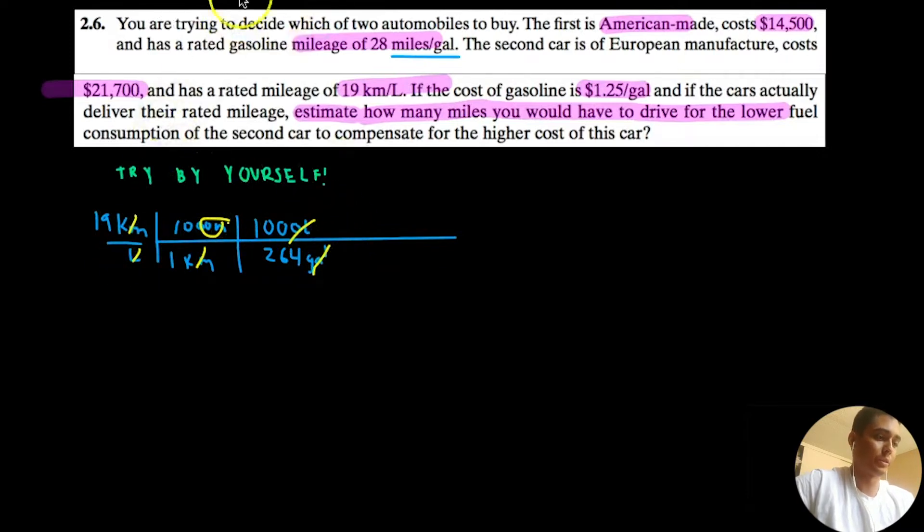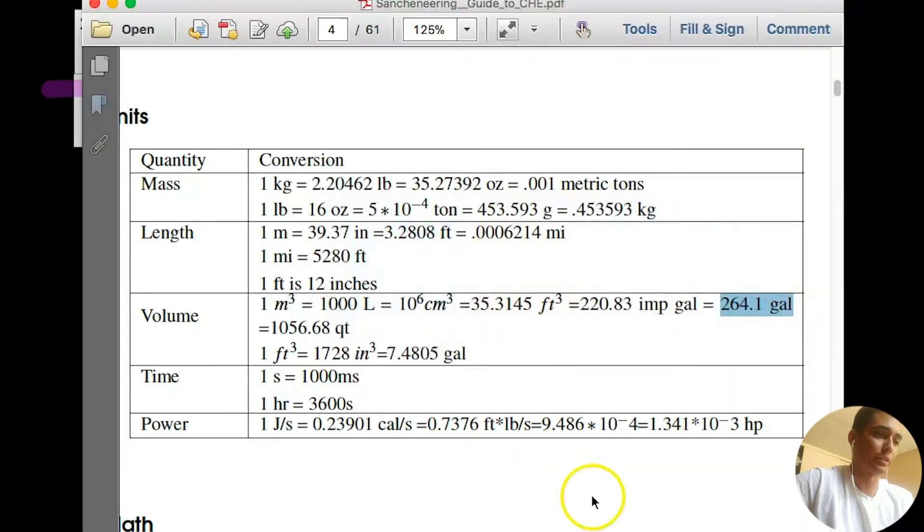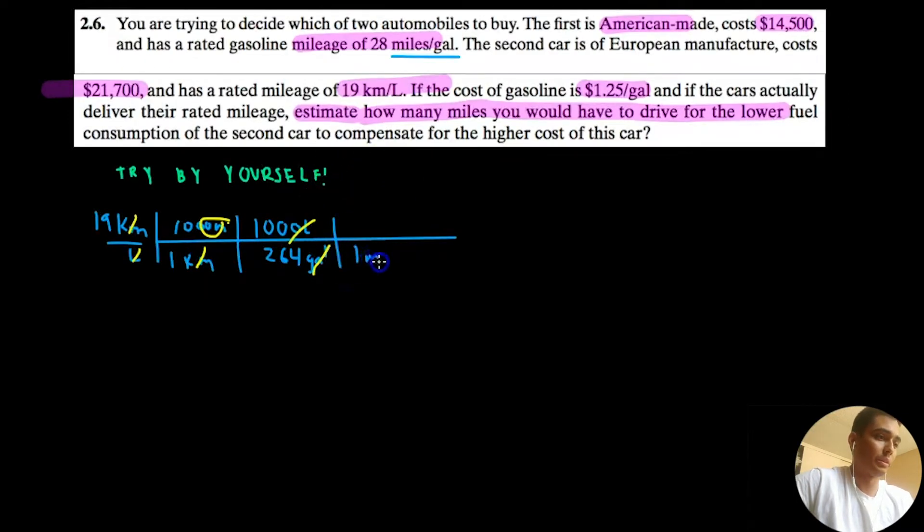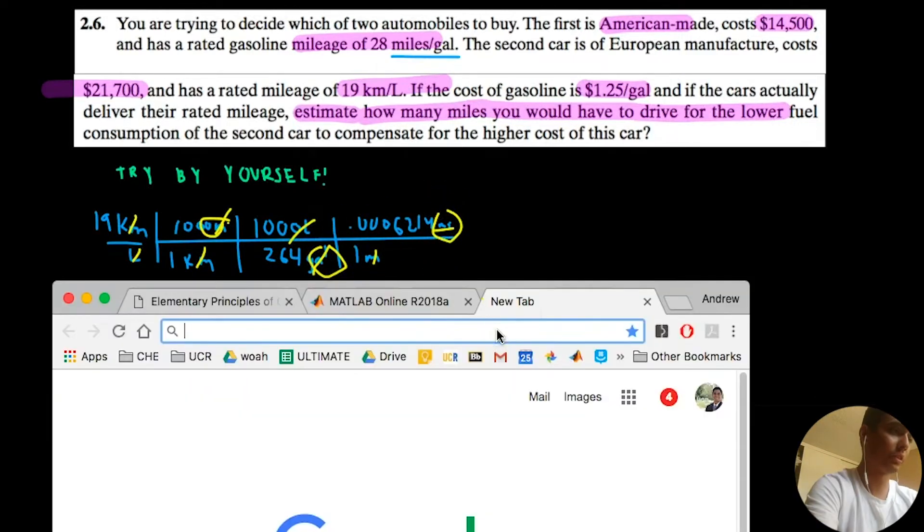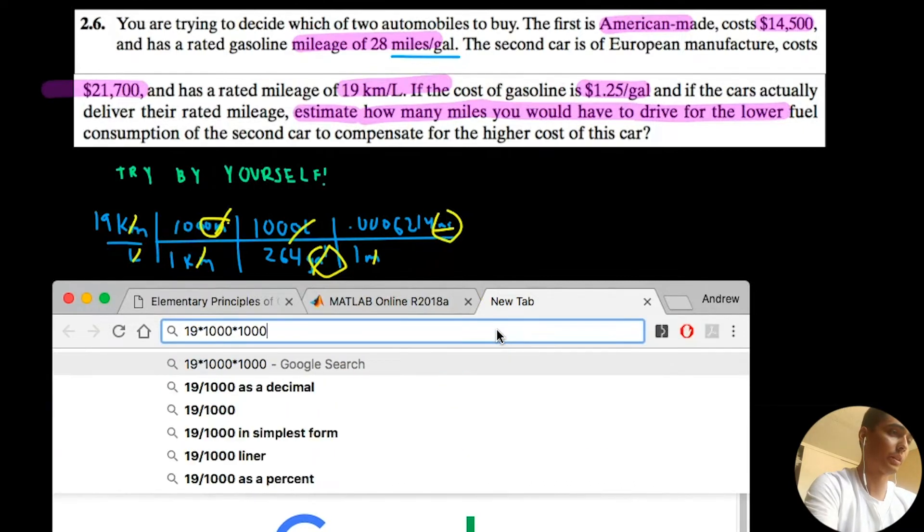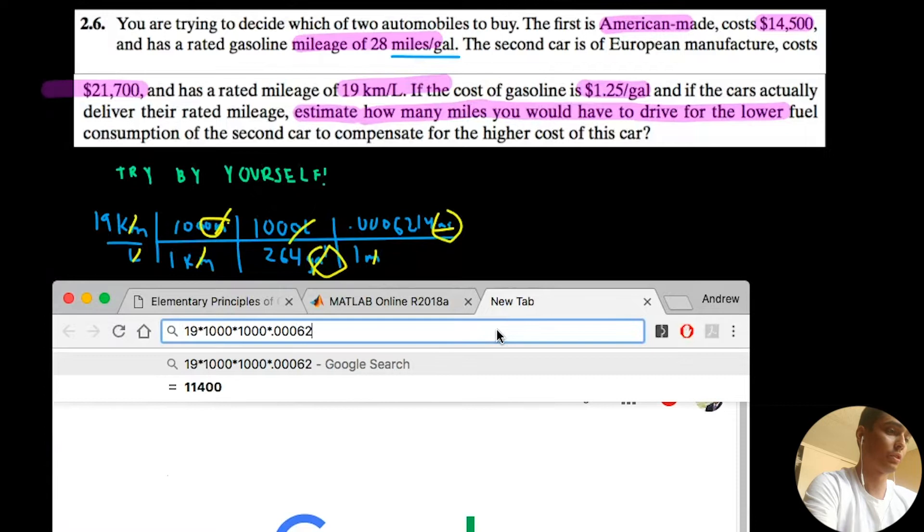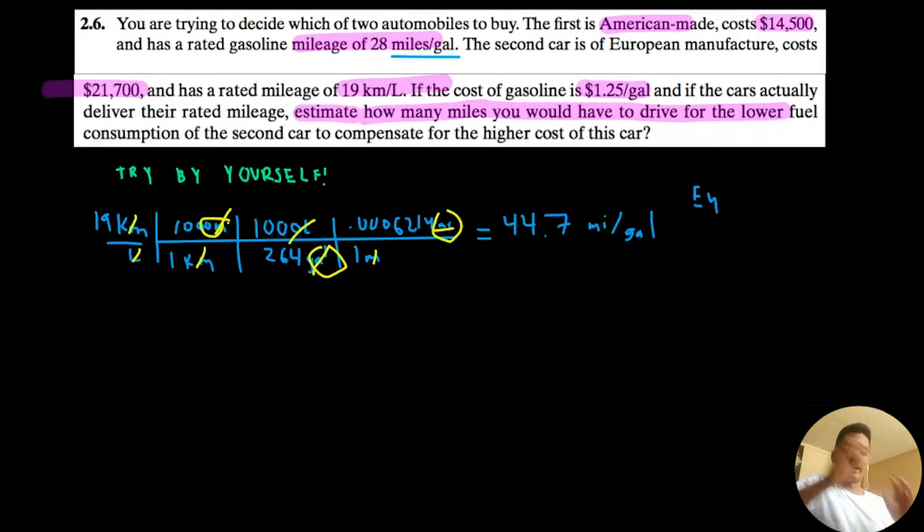We have meters, and meters cancel. I almost forgot to convert from meters to miles. Try saying that real fast. 1 meter is 0.006214 miles. Cancel out meters and meters, and now we have miles per gallon. Let's do this calculation. 19 times 1,000 times 1,000 times 0.006214 divided by 264.1. 44.7. This is the mileage of the European car.